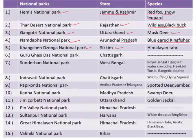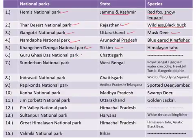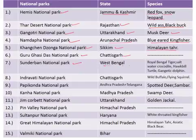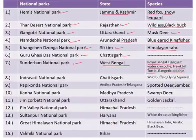Next is the Guru Ghasidas National Park situated in the state of Chhattisgarh. Sundarban National Park is situated in the state of West Bengal and is famous for the Royal Bengal Tiger, the saltwater crocodile, the hawksbill turtle, and the Gangetic dolphins. Gangetic dolphins are endemic to the Ganga River, which is why Sundarbans National Park is a habitat for them.